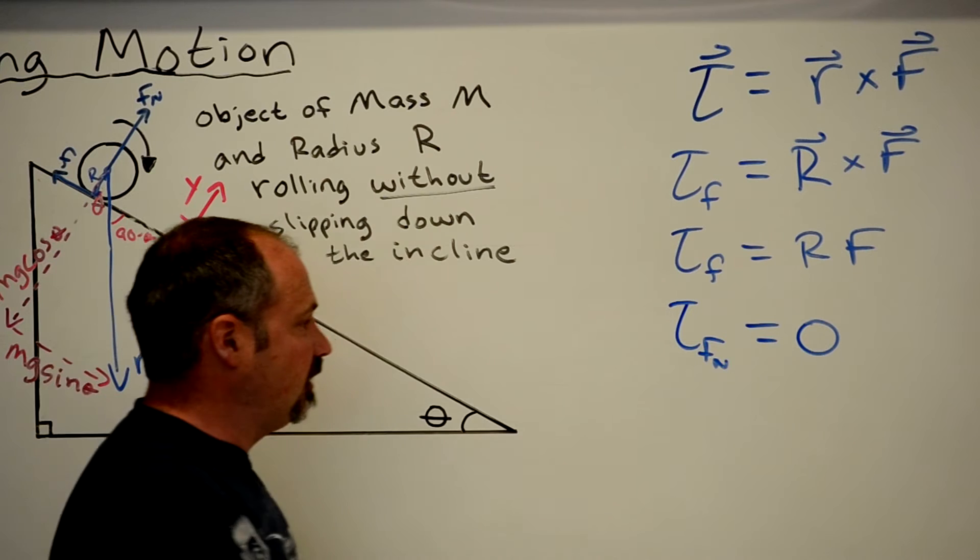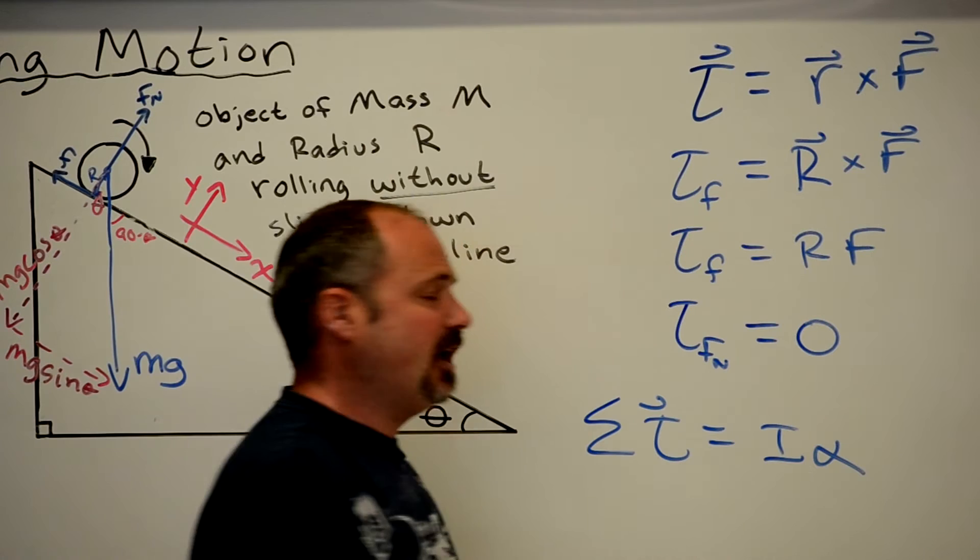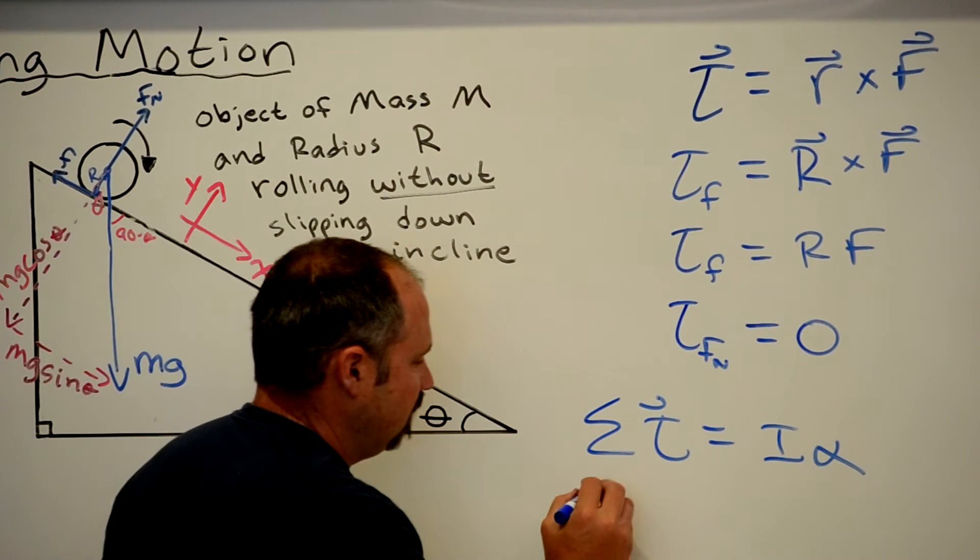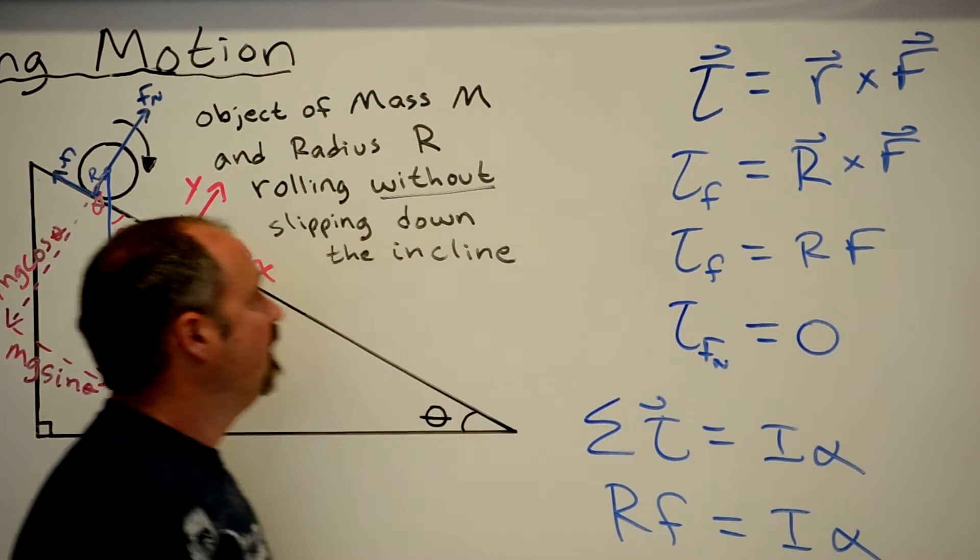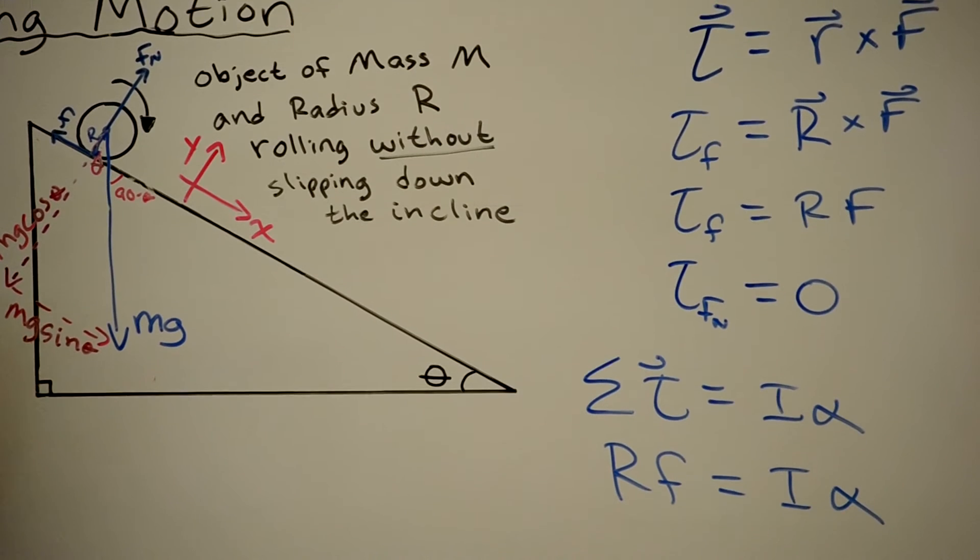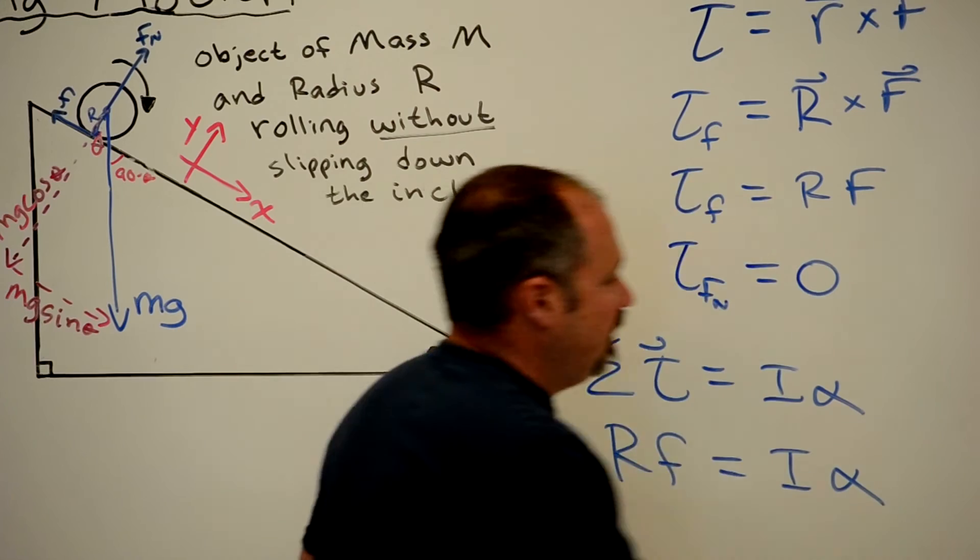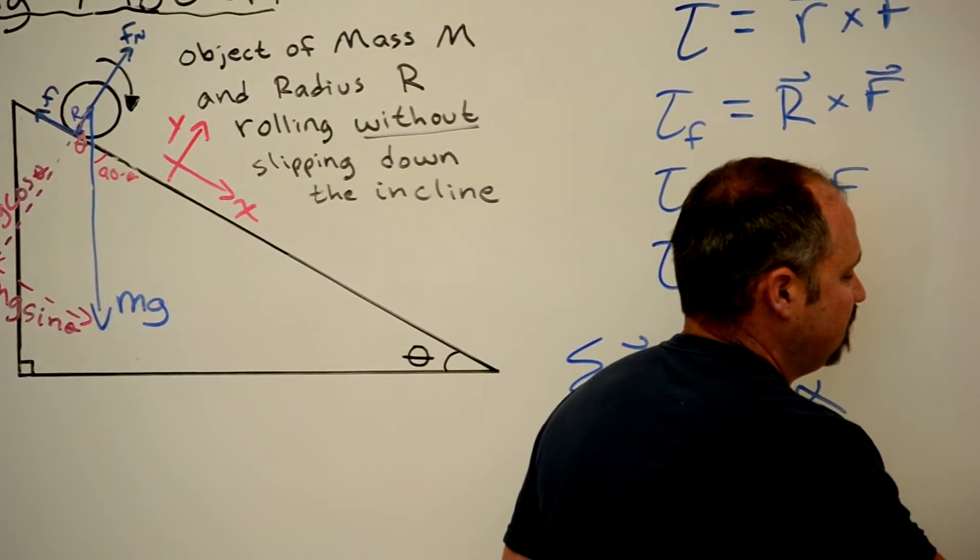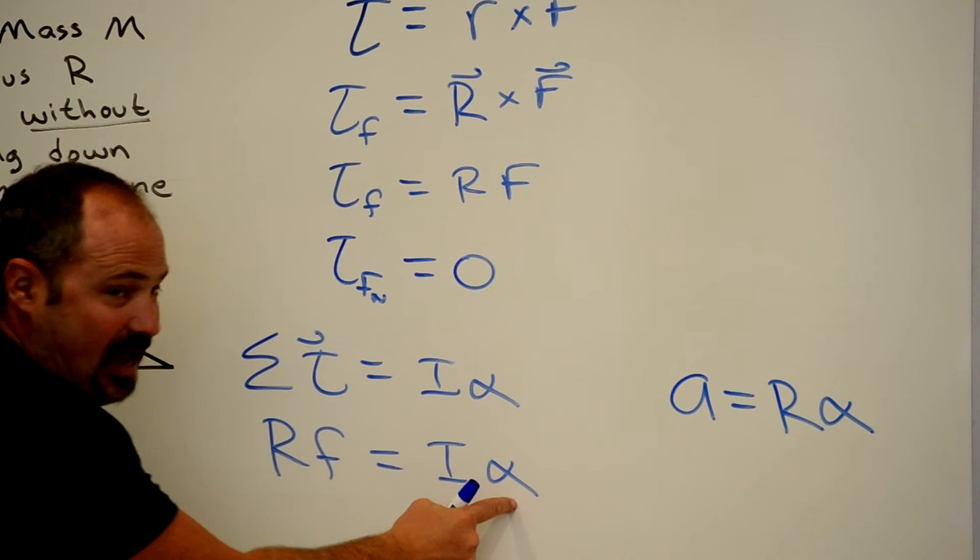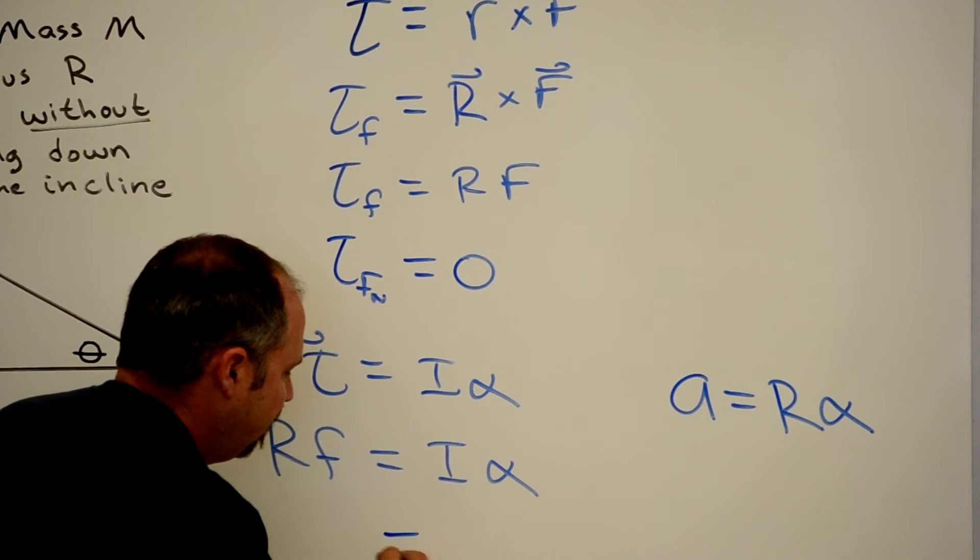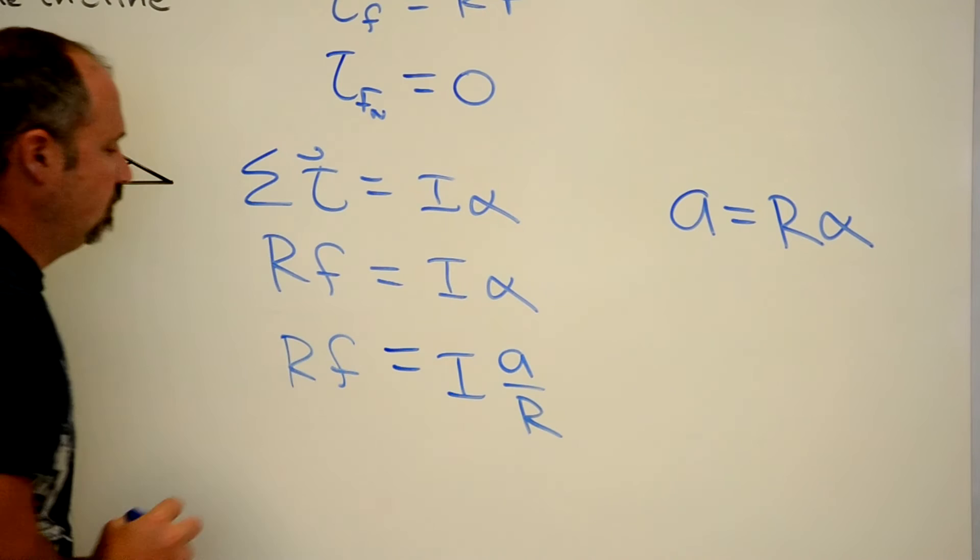So let's use Newton's second law for rotation. The sum of the torques equals I alpha. And we only have one torque, the torque of friction. So that's rf equals I alpha. Now, the objects are rolling without slipping. When something is rolling without slipping, then this is true. So I will plug in for the angular acceleration. And I get I acceleration over r.